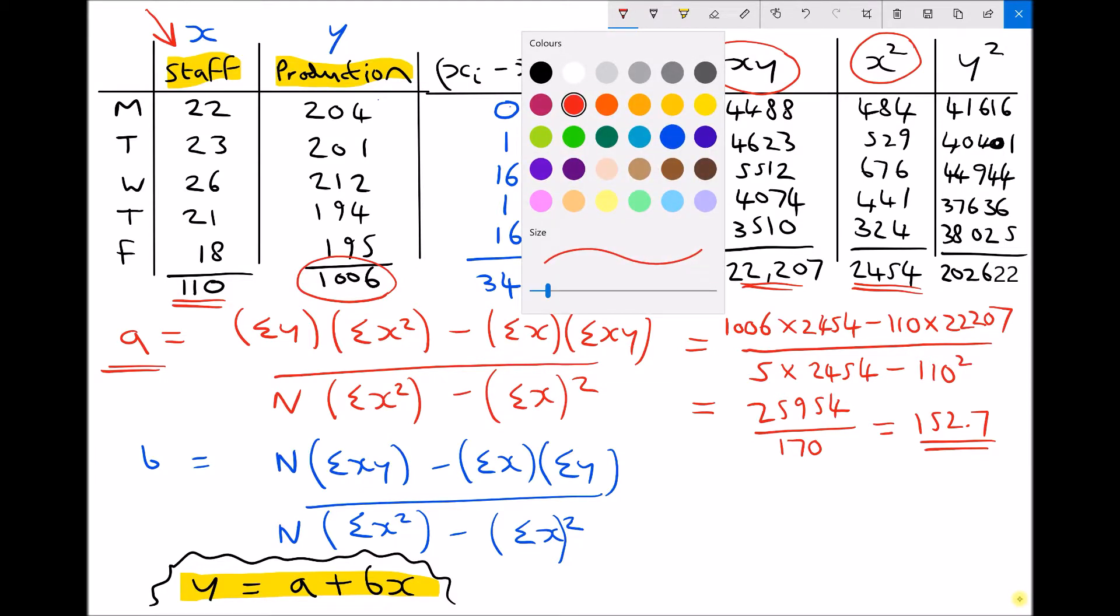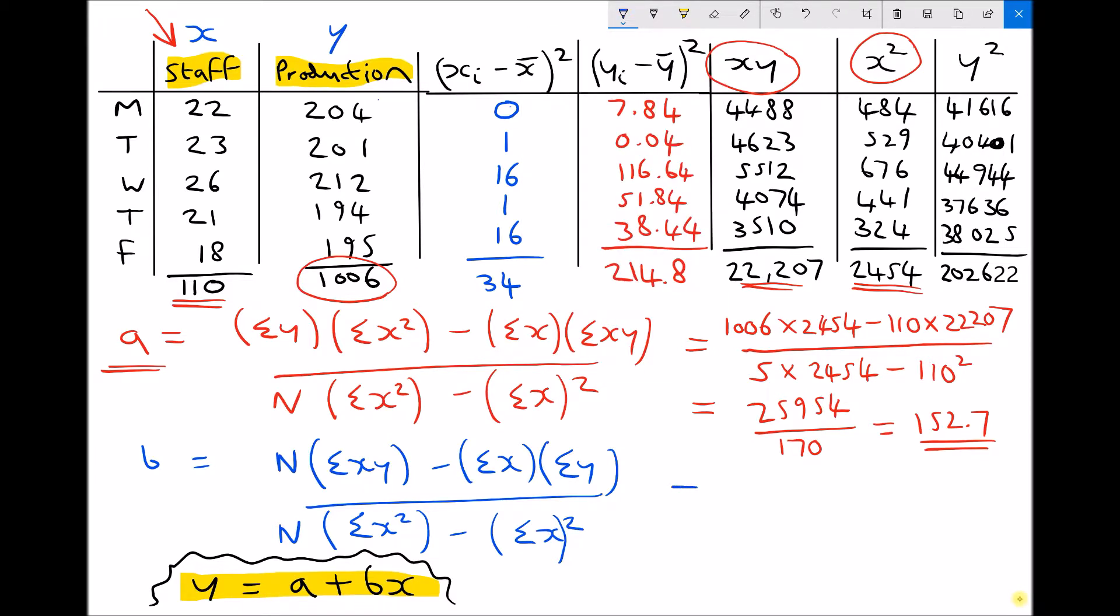Now let's do our calculation for b. We already know that the bottom of that fraction is going to equal 170, so we're not going to need to recalculate that.